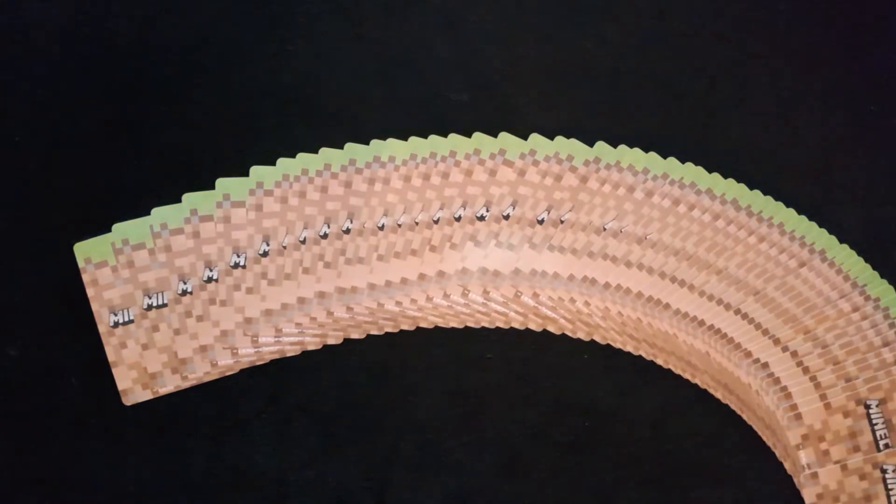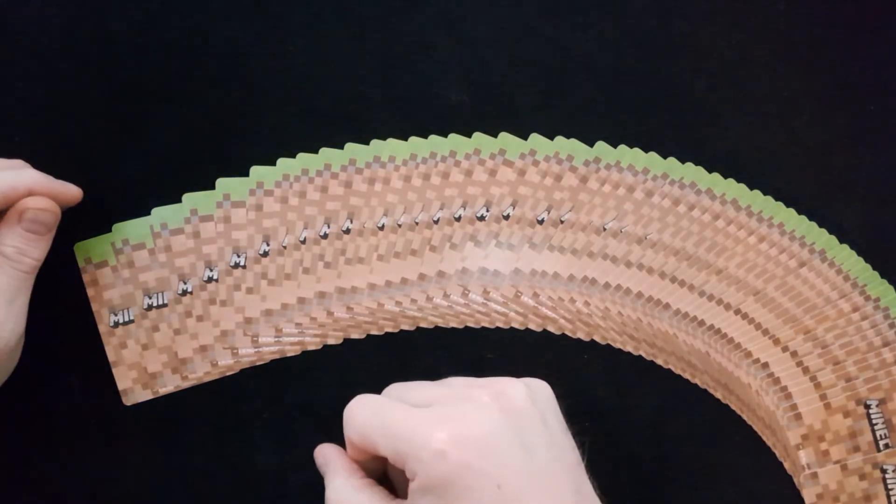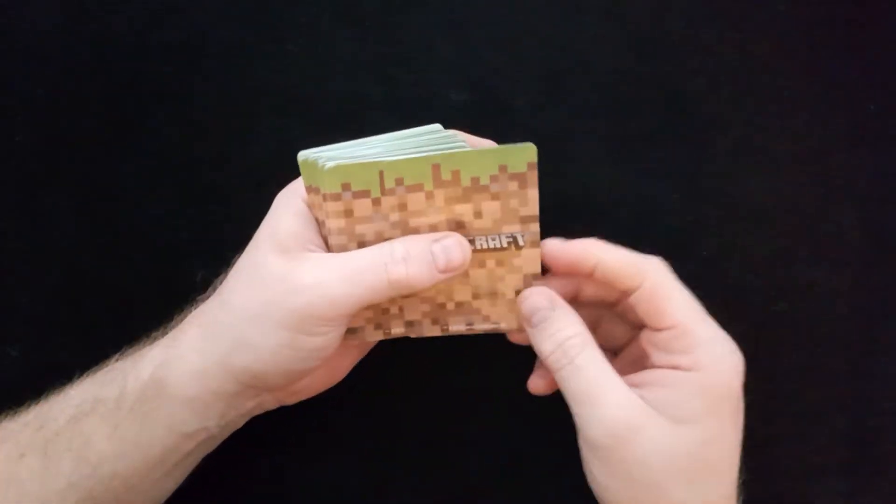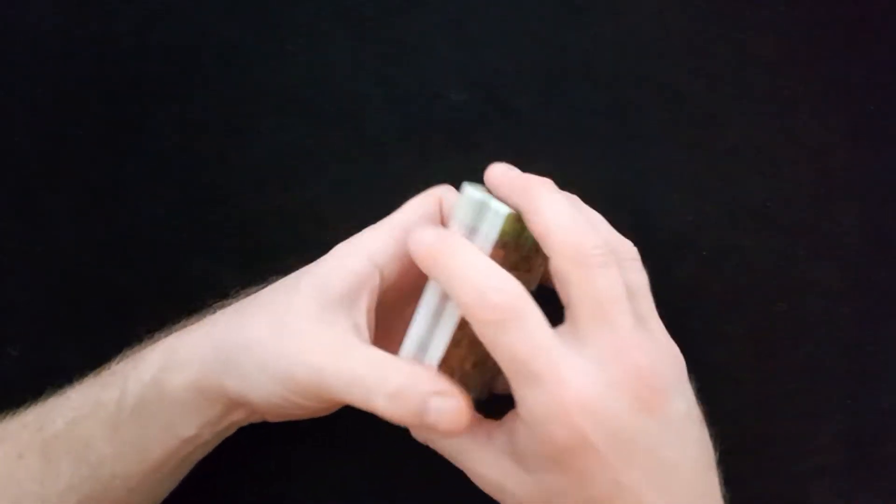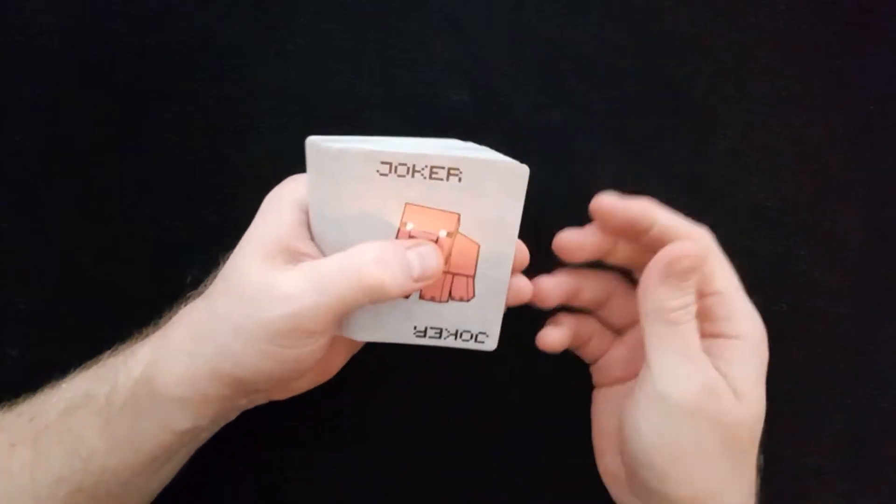So we've got a nice spread. On the back design you've got a one-way design and you've got the grass blocks, block green design. Let's have a look. So let's have a look at the cards then. So what's that one Harry?